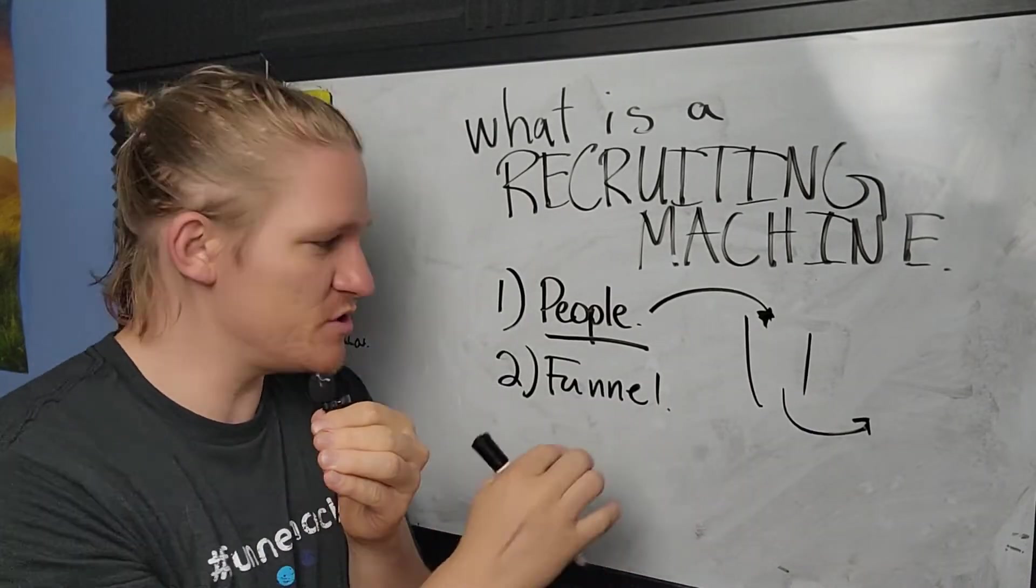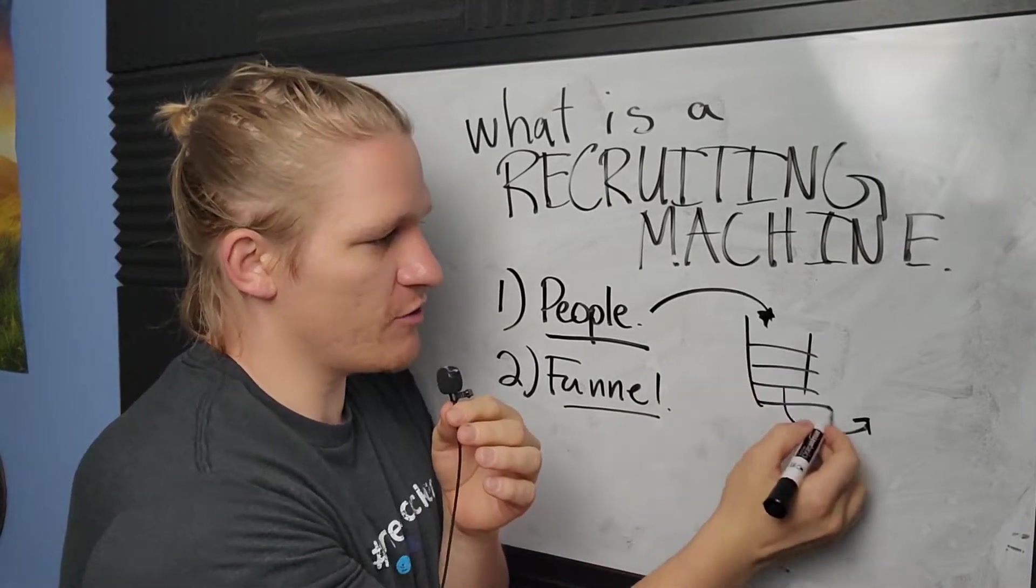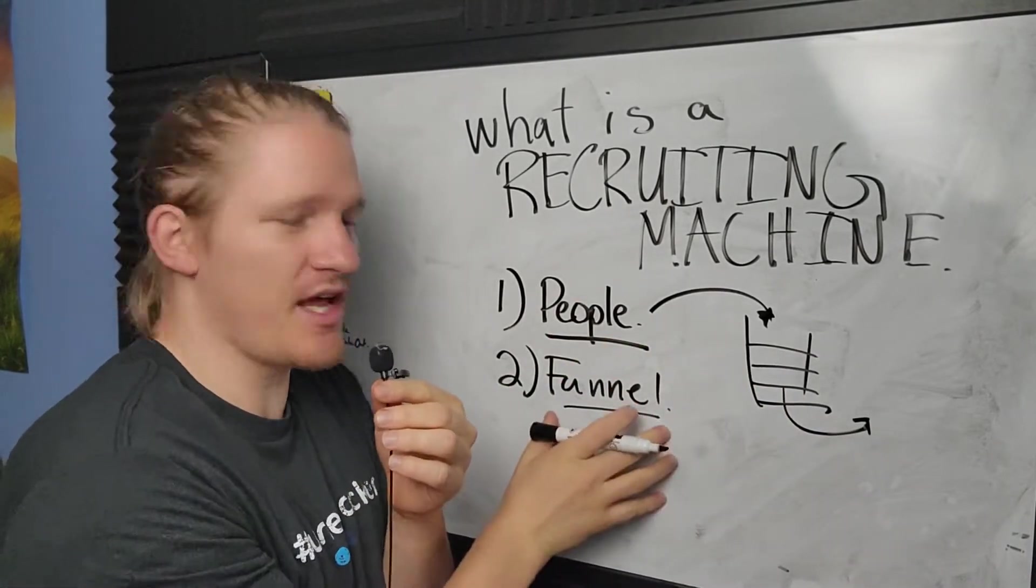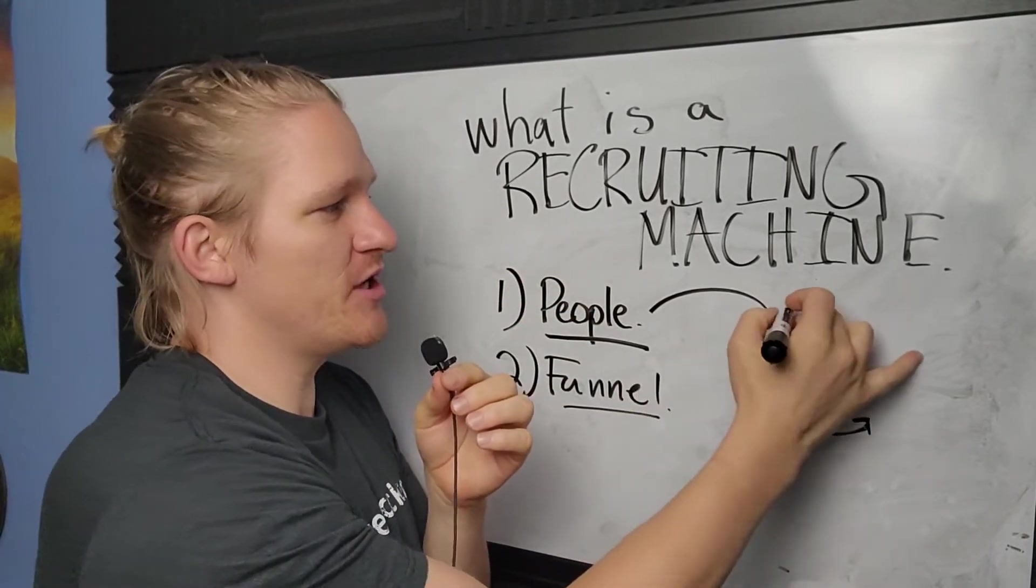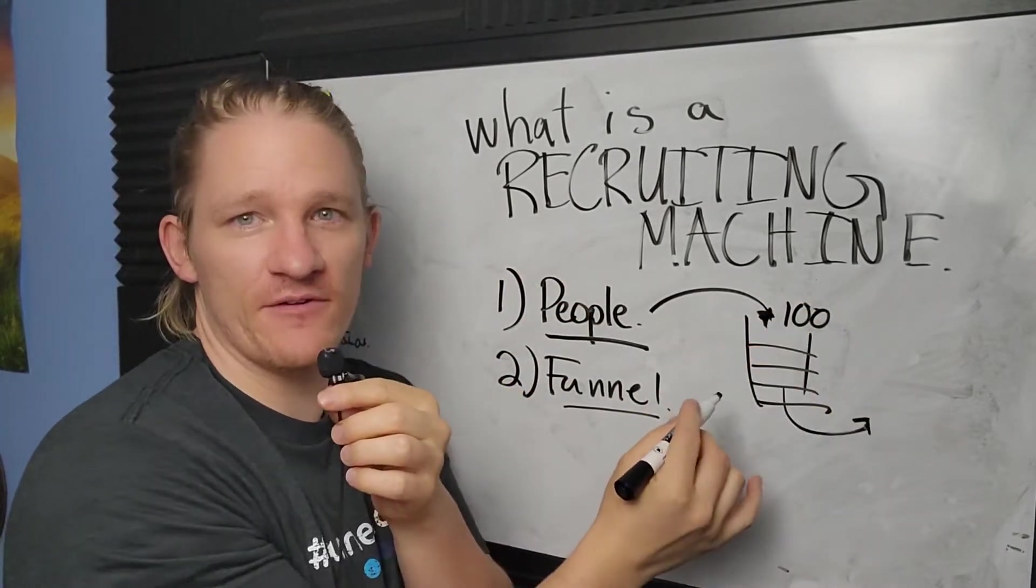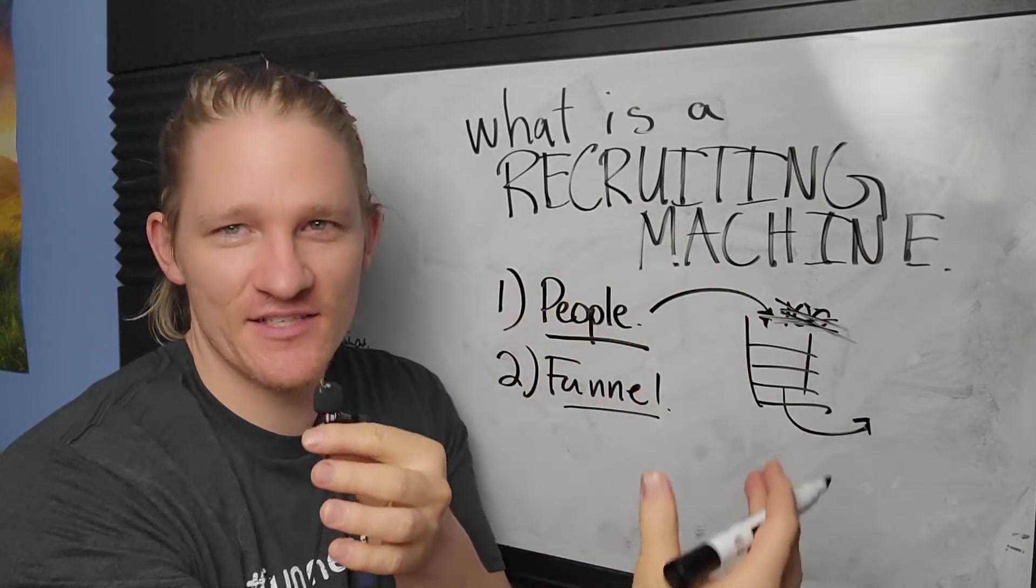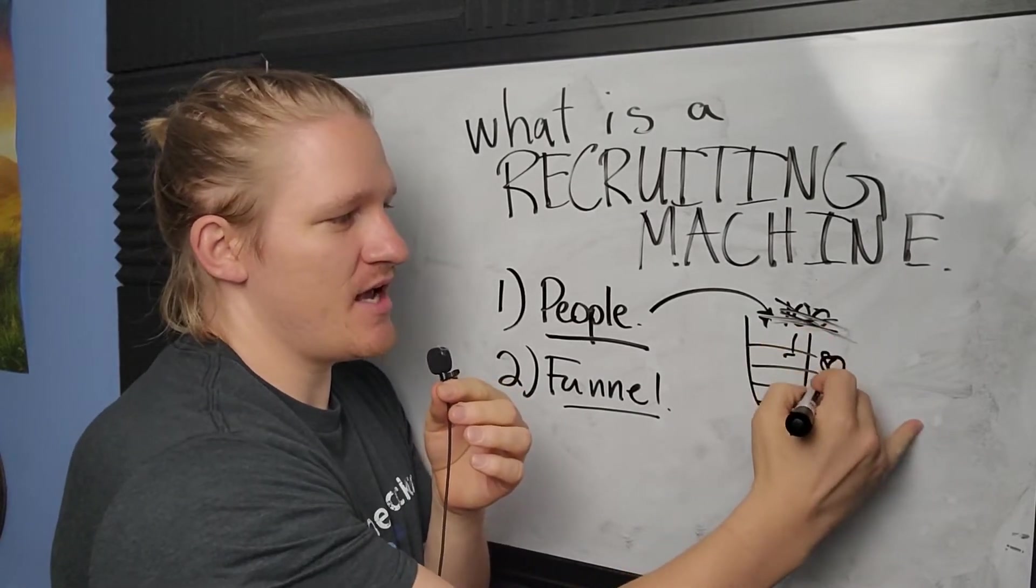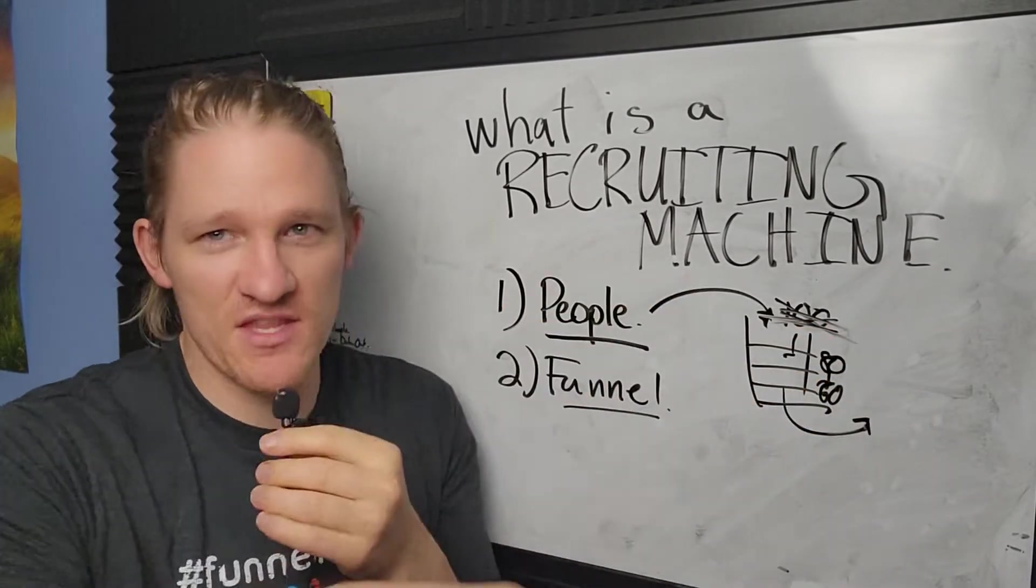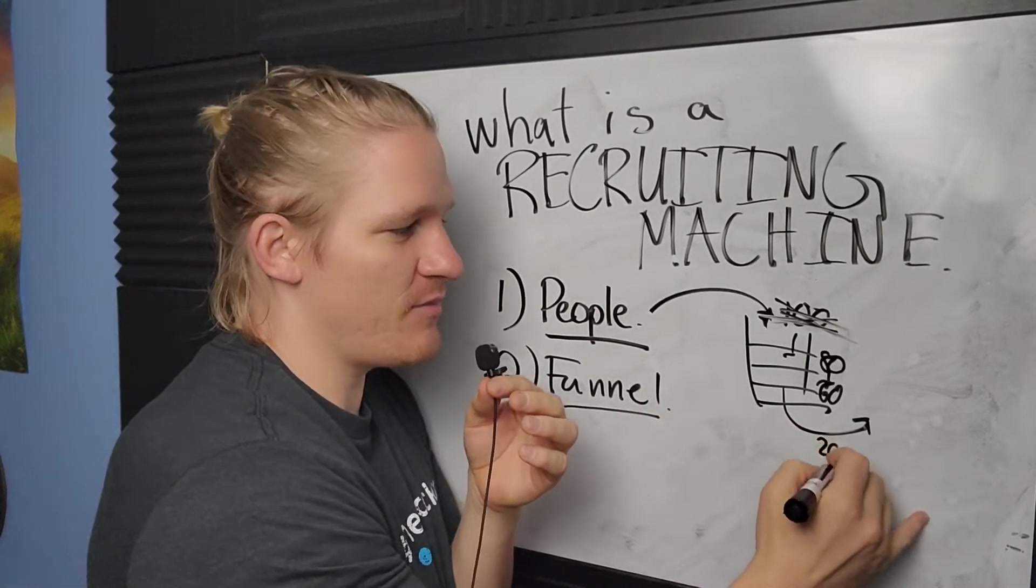Number two, a part of the recruiting machine is the sales funnel. And this is the part here where you're filtering people out. When I think of a funnel, I think of like a filter. You put in a hundred people here into the very top of your funnel and it filters everyone out for you. So you don't have to go through all the rejection. It takes the rejection. So say maybe 80 people make it to the next step and then 60 people make it to the next step. And the entire time they're just getting filtered out, filtered, filtered, filtered.